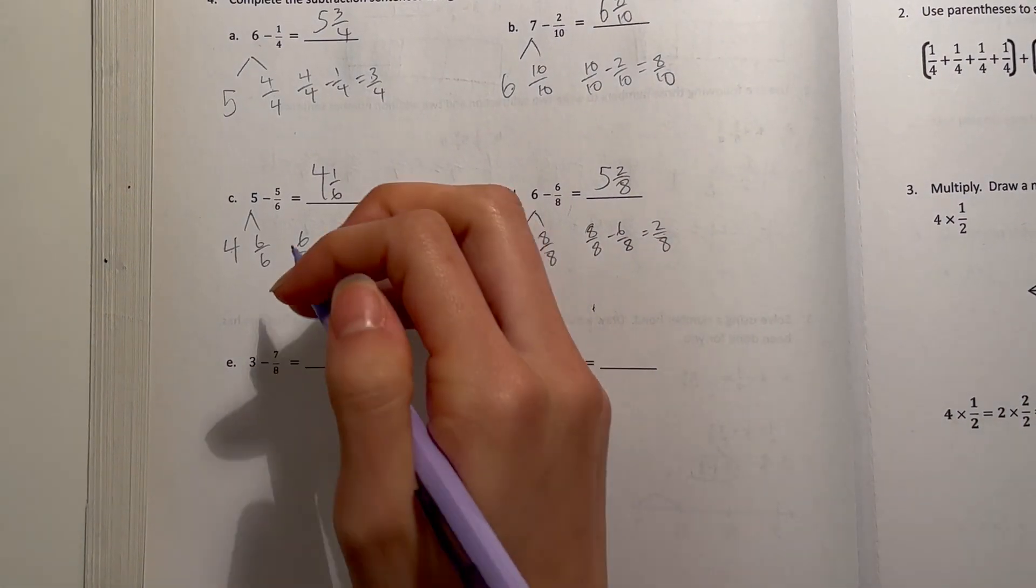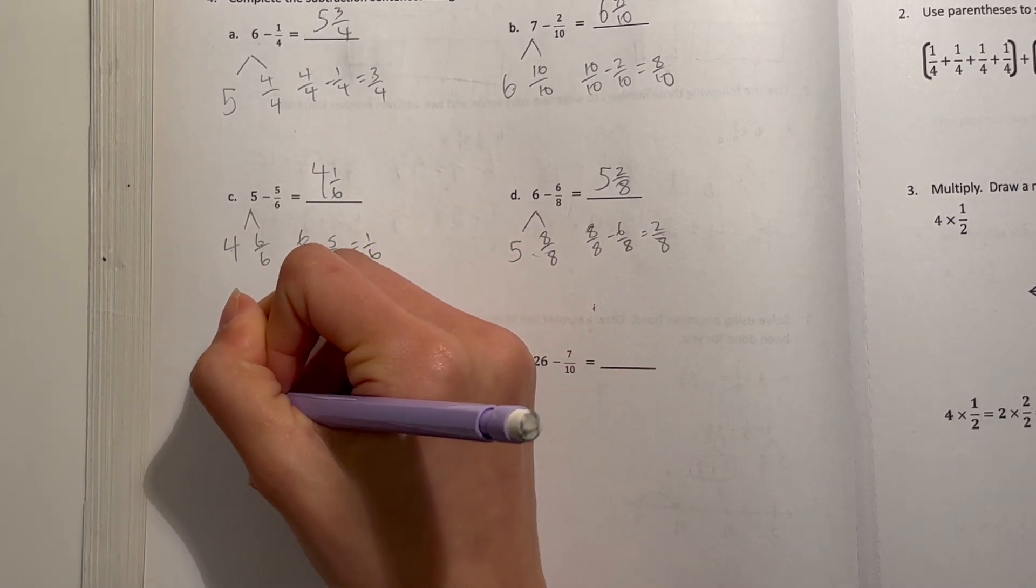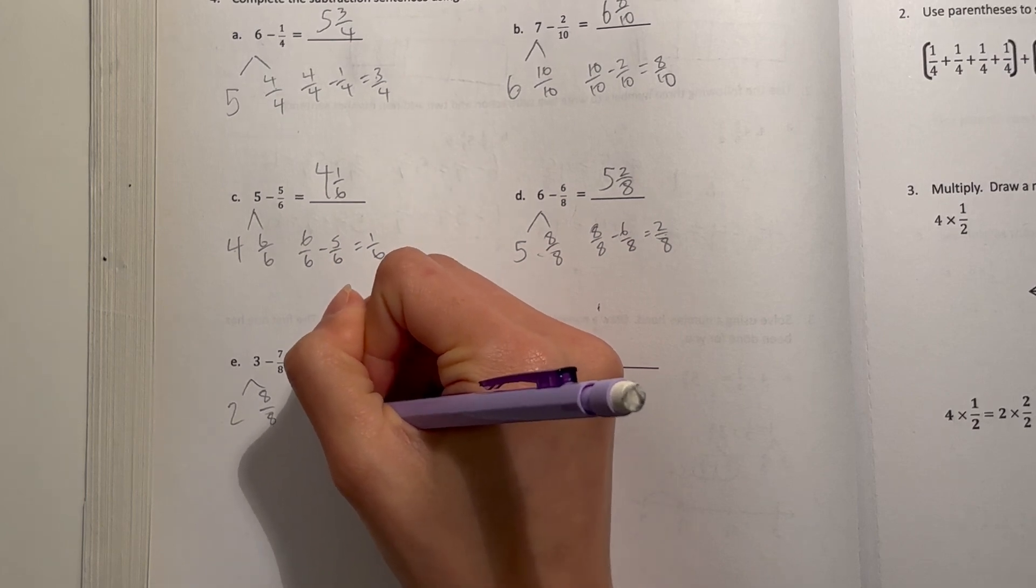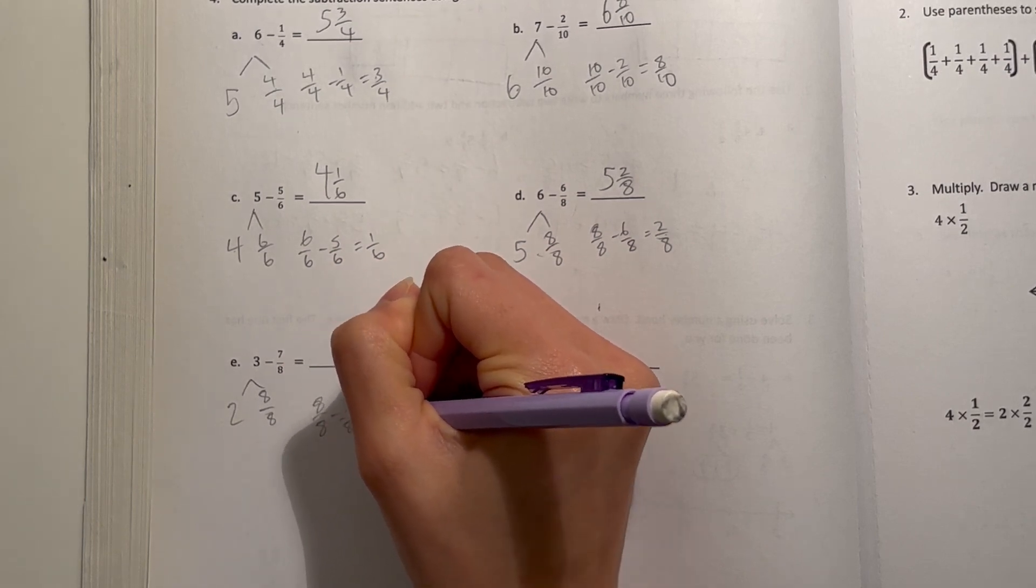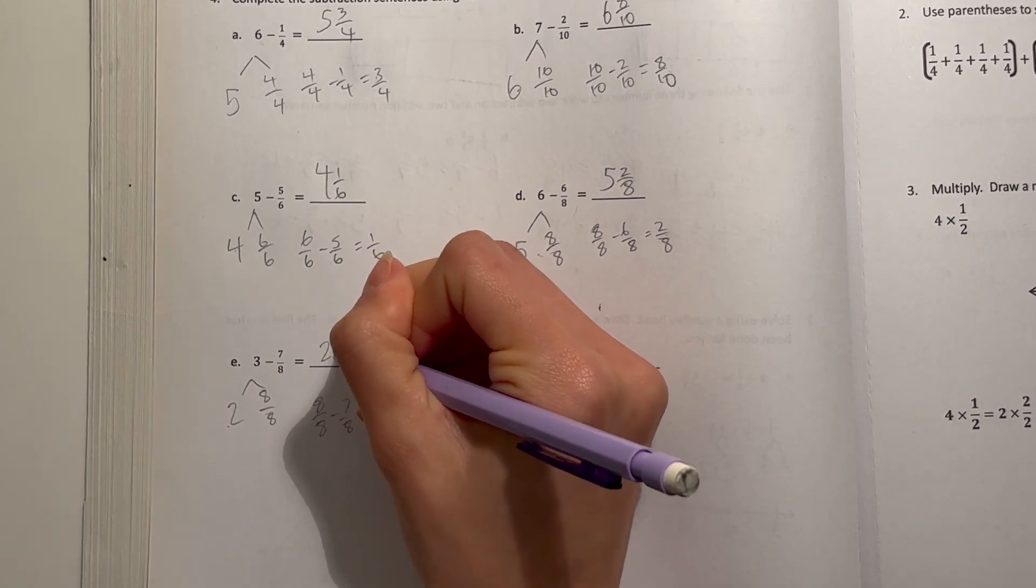All right, E, 3 minus 7 eighths, take out 8 eighths, 2 left over. 8 eighths minus 7 eighths is 1 eighth. That's 2 plus 1 eighth, which is 2 and 1 eighth.